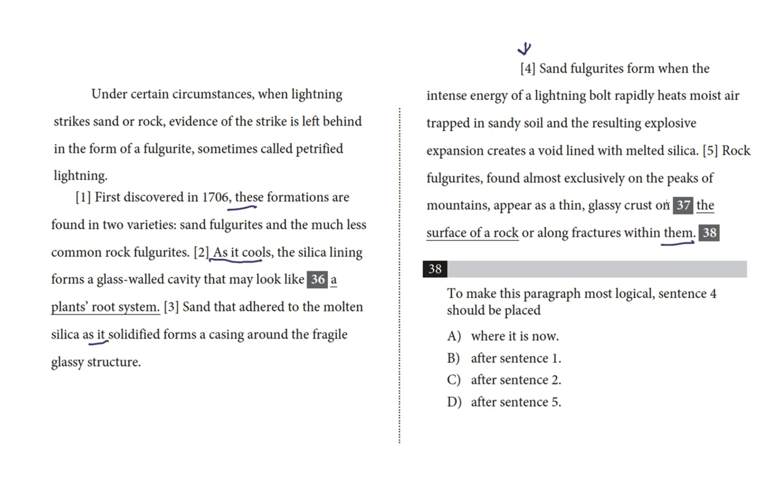Okay, so a strategy I'm going to use in order to save time is to not test each answer in context. I'm going to make a prediction about where sentence four ought to go. So let's go through these pronouns. We have 'these formations' in sentence one, but that refers to fulgurites in the previous paragraph. So that's all right.